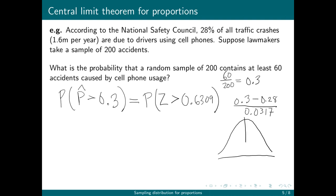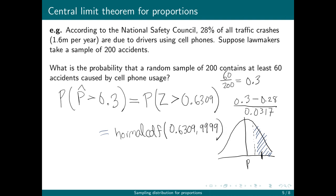Here's our distribution of proportions. Our true proportion is 0.28. One standard deviation puts us right where 0.3 is, so we're looking for the area above that value. We use the normal CDF function with a lower bound of 0.6309 and an upper bound of positive infinity, represented as 9999 or 1E99 on the calculator. That turns out to be 0.2641. Considering that 16% of the data is past one standard deviation, 26% makes sense. We always try to use the empirical rule to check our answers before we calculate.